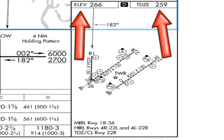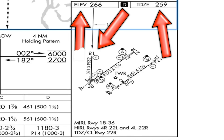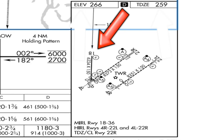As you can see, this plate is for runway 18. The field elevation is 266 feet, and the touchdown zone elevation is 259 feet. That's not a huge difference here in Little Rock, but there are some airfields where these differences can be pretty significant.